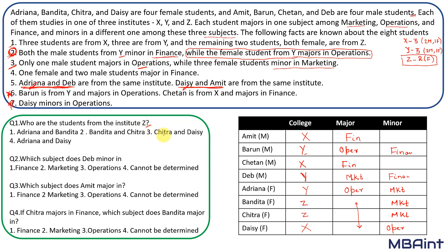Let's answer the questions. Who are the two students from institute Z? The answer is Bandita and Chitra. What subject do they minor in? They minor in finance. What subject does Amit major in? Amit majors in finance. For question four: if Chitra majors in finance, what does Bandita major in? Bandita cannot major in marketing since she already minors in marketing, so Bandita majors in operations. The answer is operations.